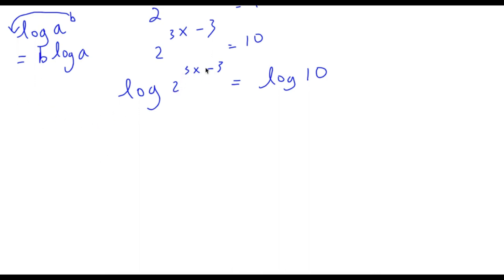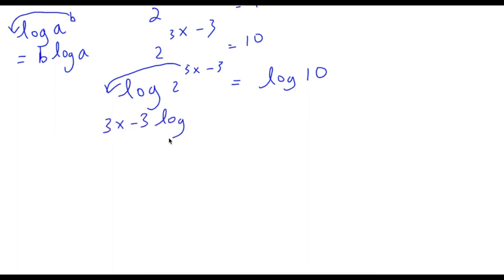In this case, I'm going to use this property to move the exponent 3x minus 3 to the front. So now I have 3x minus 3 times log 2 is equal to log 10.